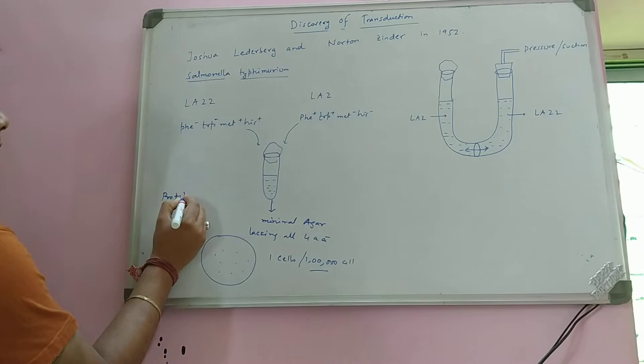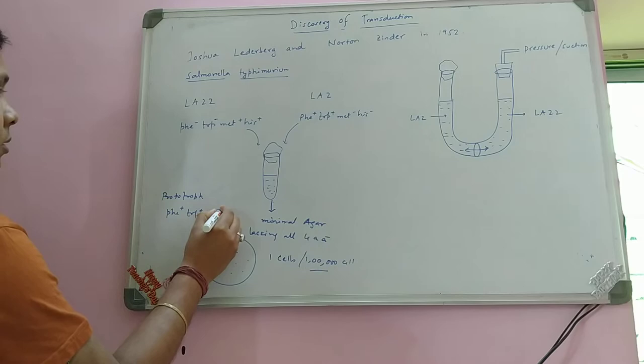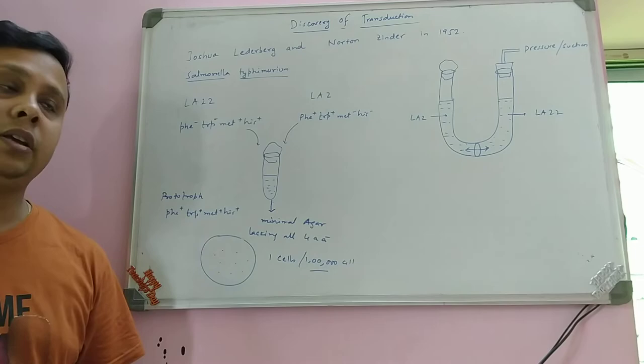Those colonies should be prototrophs. Prototroph means they contain all four functional genes — phenylalanine plus, tryptophan plus, methionine plus, and histidine plus. This suggested that some sort of recombination event had occurred between the LAT2 and LAT22 strains.